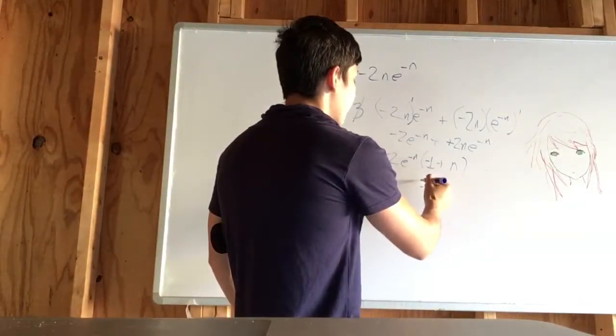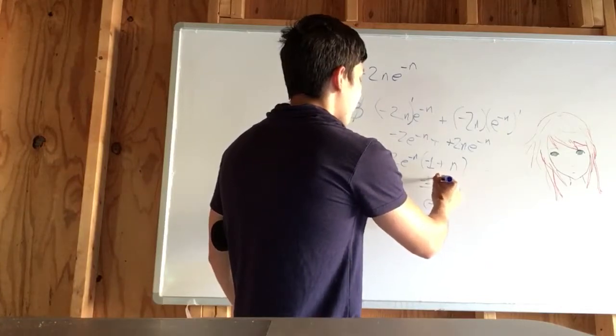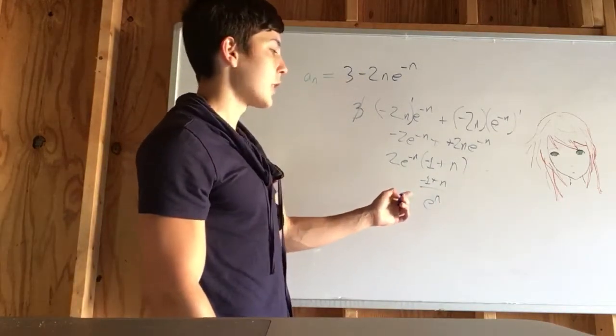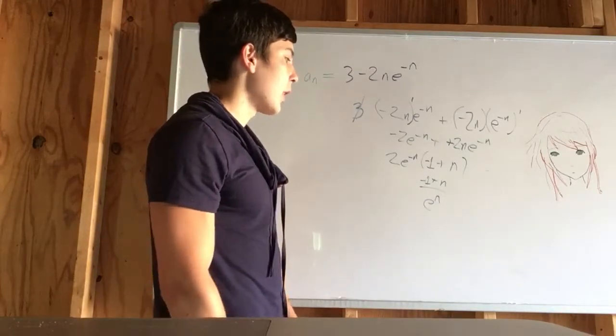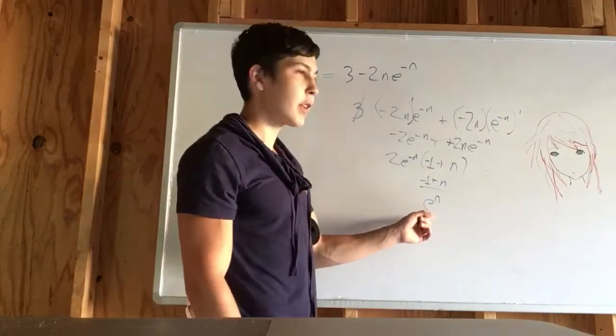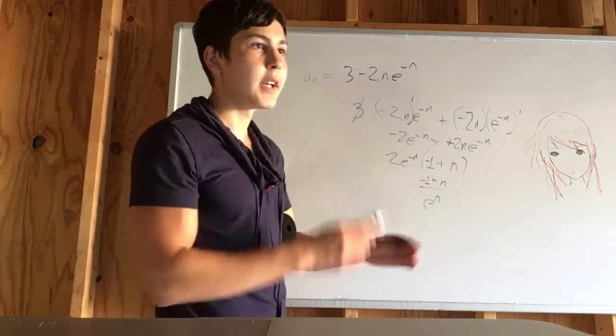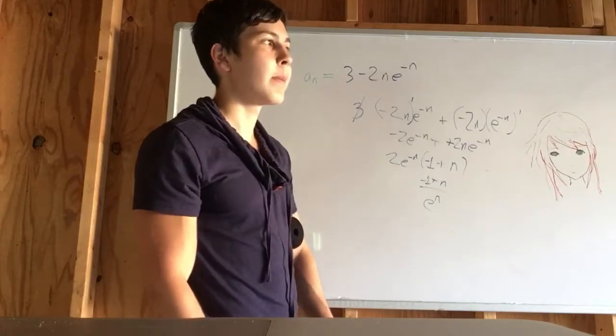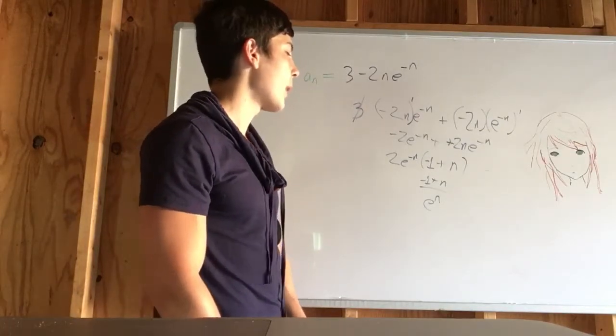And over here on top you have something which is just integers. It goes 0, 1, 2, 3, 4, no matter what you plug in. And here you're constantly increasing the value of e, you're dividing by that. So it's always going to be decreasing, no matter what.